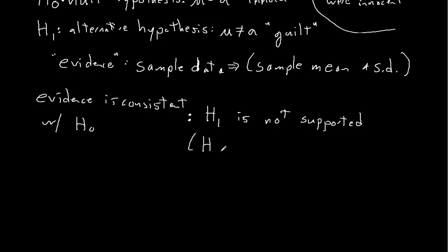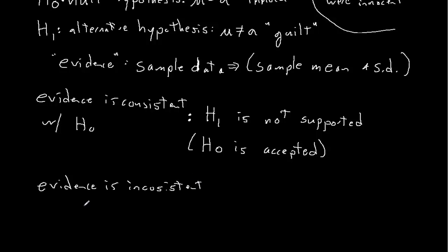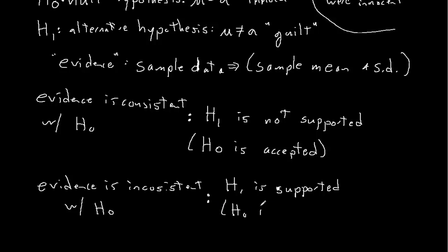This is also sometimes said that the null hypothesis is accepted. You can either look at it focusing on the alternative hypothesis H sub 1, or the null hypothesis H sub 0. If, on the other hand, the evidence is inconsistent with the null hypothesis — with innocence — then the alternative hypothesis is supported. In other words, the null hypothesis is rejected. We're going to use this terminology that refers to the alternative hypothesis, but you might see the terminology that refers to the null hypothesis in literature, so I want to point out that that is common as well.